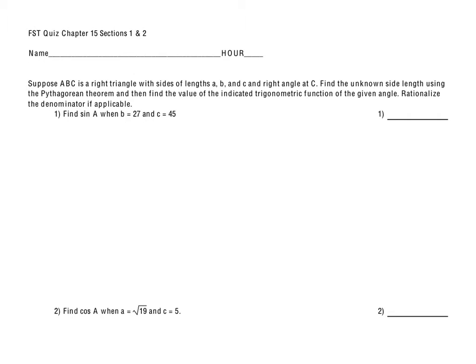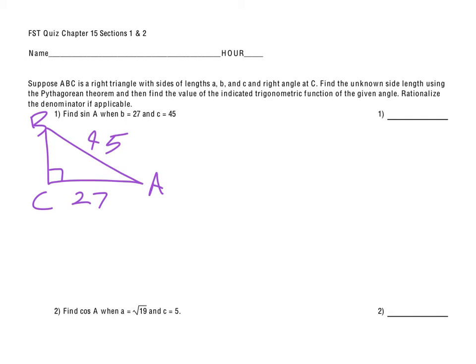To begin with this first question, we're going to suppose that ABC is a right triangle. They give me for number 1 that side B is 27 and side C is 45. One of the very first things I would do would be to just sketch out that triangle. It does not have to be to scale, but it helps if the 90-degree angle looks like a 90-degree angle. We just want to make sure we understand where things are in relation to each other.